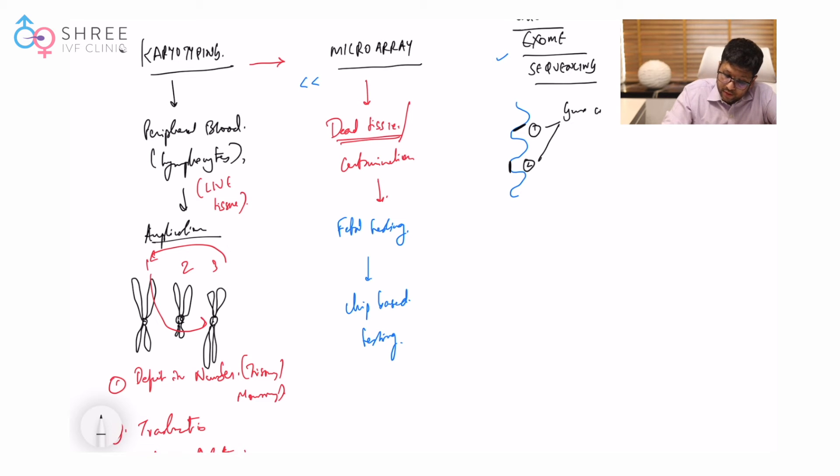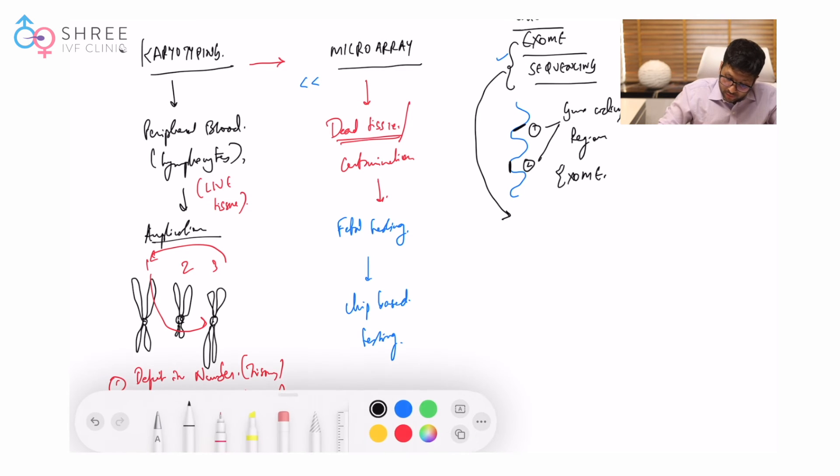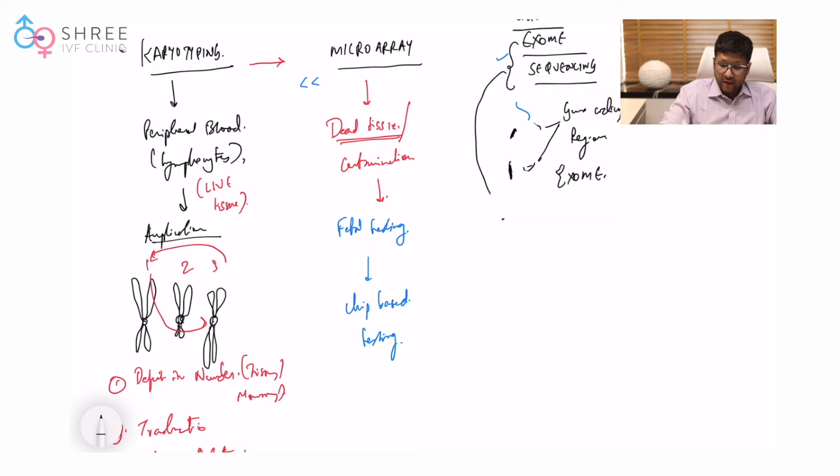When you want to look at only the protein coding regions of a gene, that is called exome sequencing. From your live tissue out of this DNA, all the unwanted DNA which is present is taken out, and only the exomes remain. These exomes are then further processed using a variety of technology.